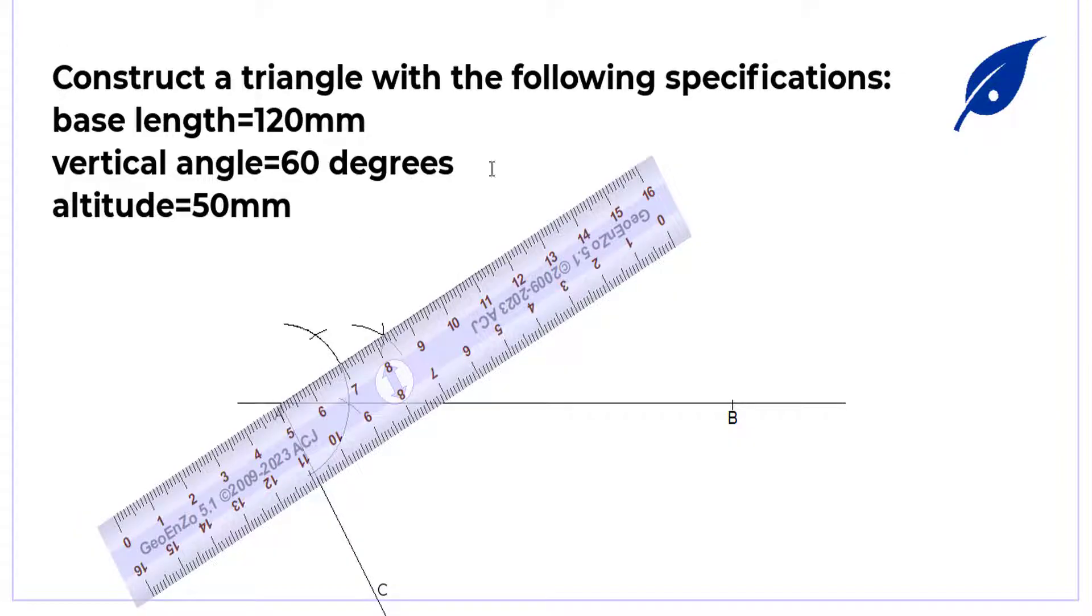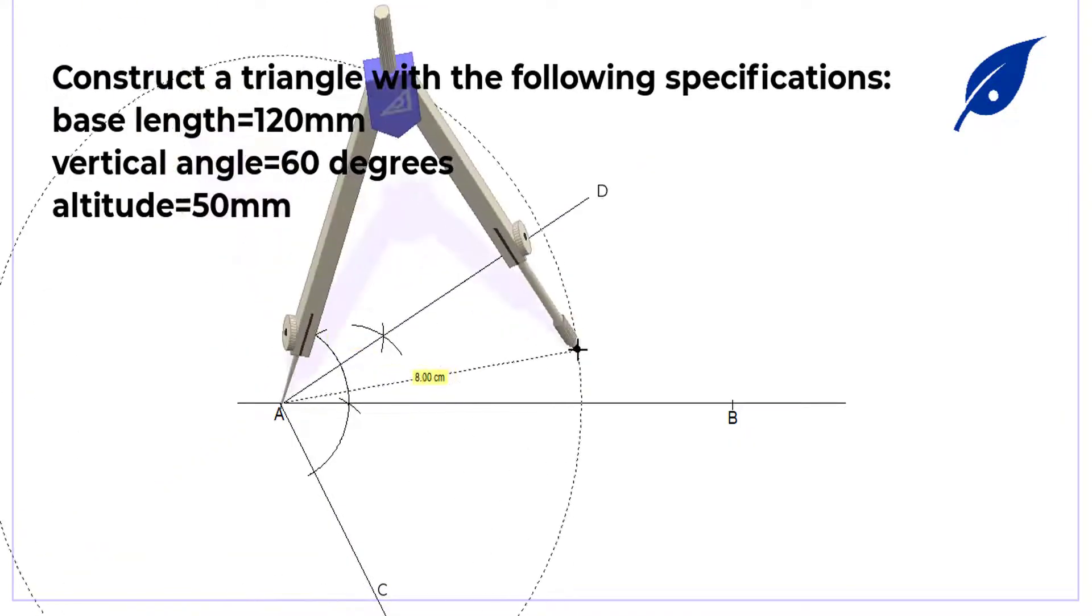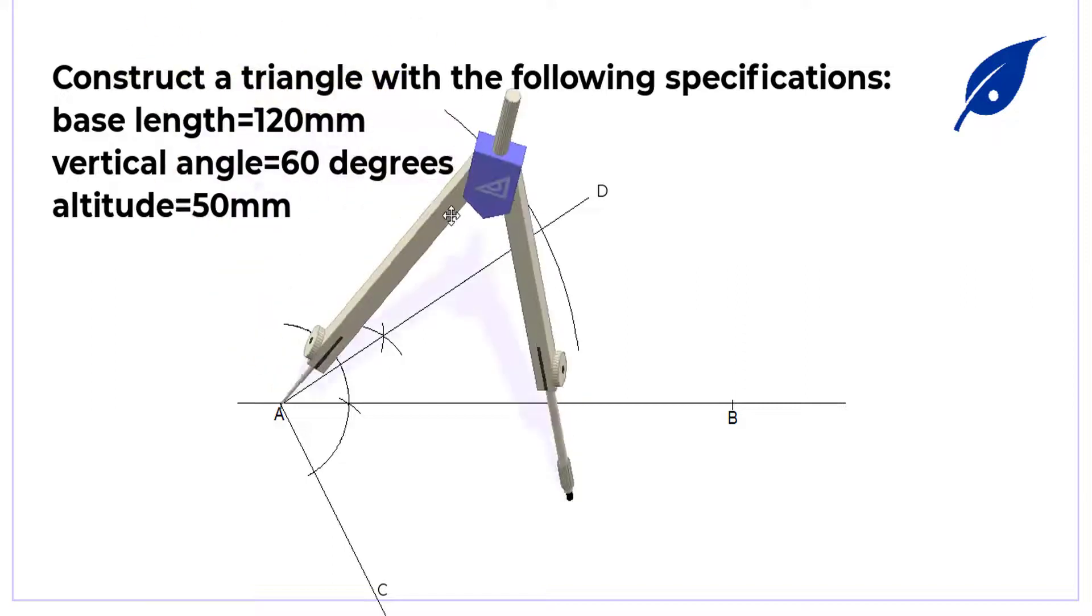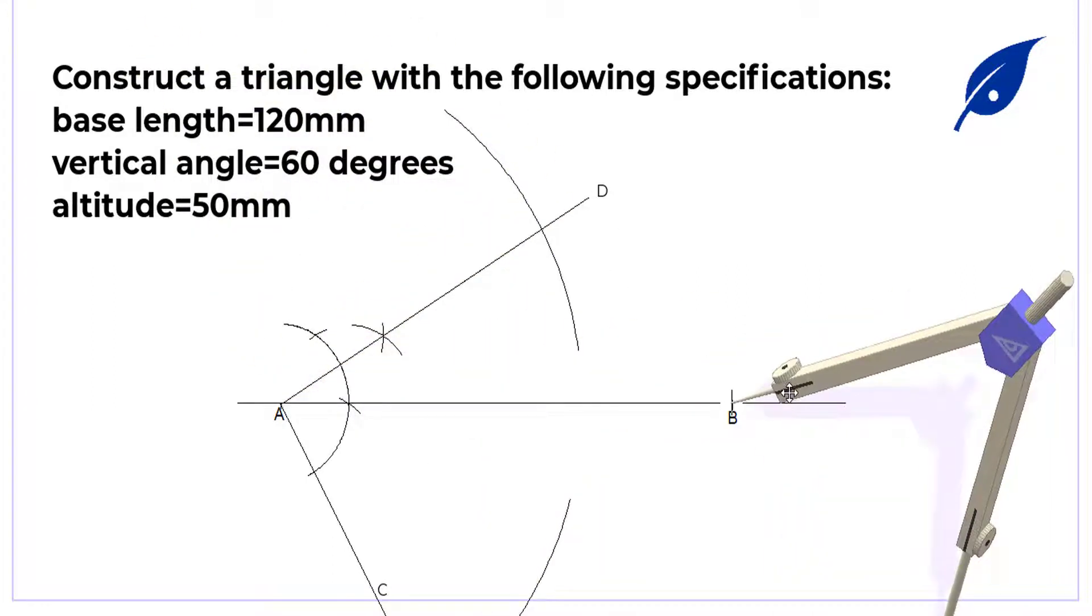After getting the line AD, we're going to bisect the line AB to get the midpoint, which is E.